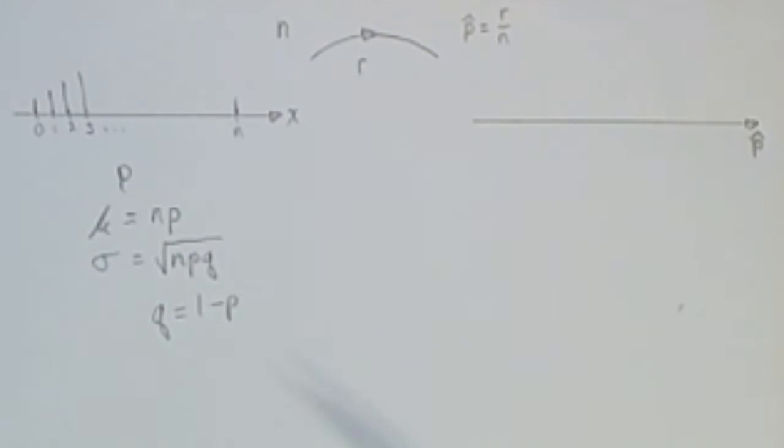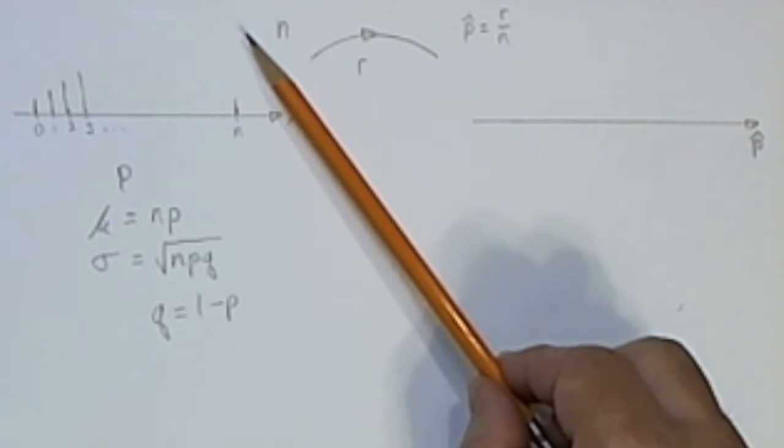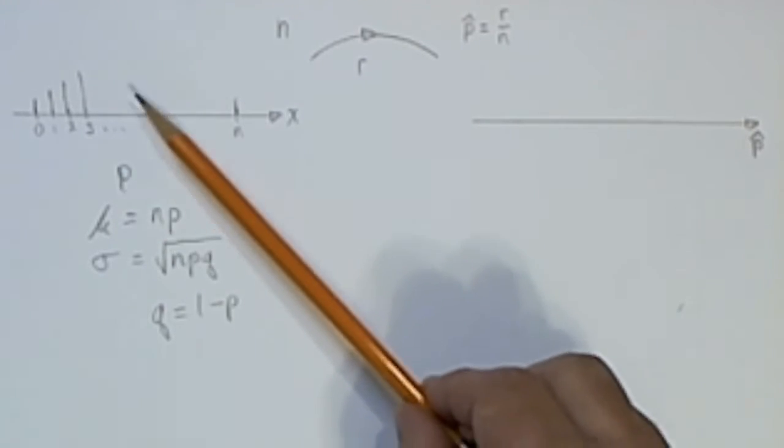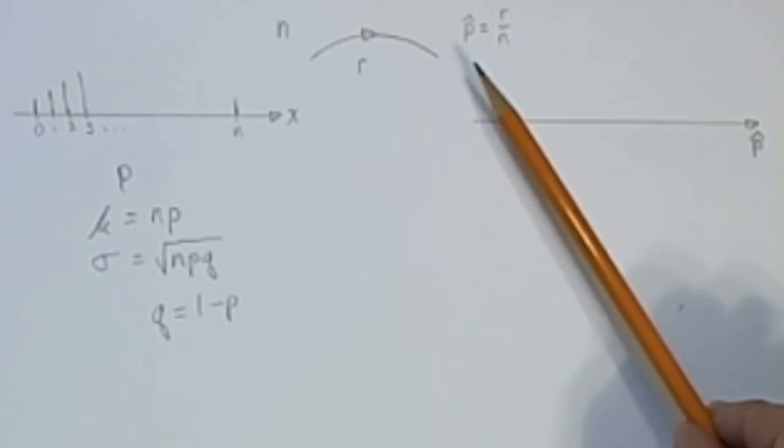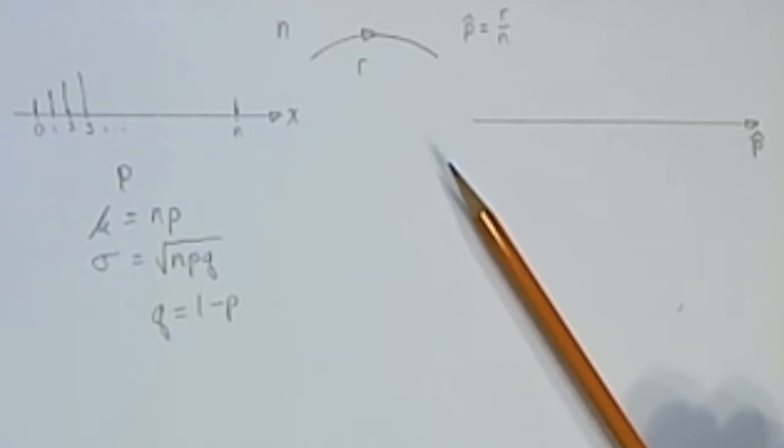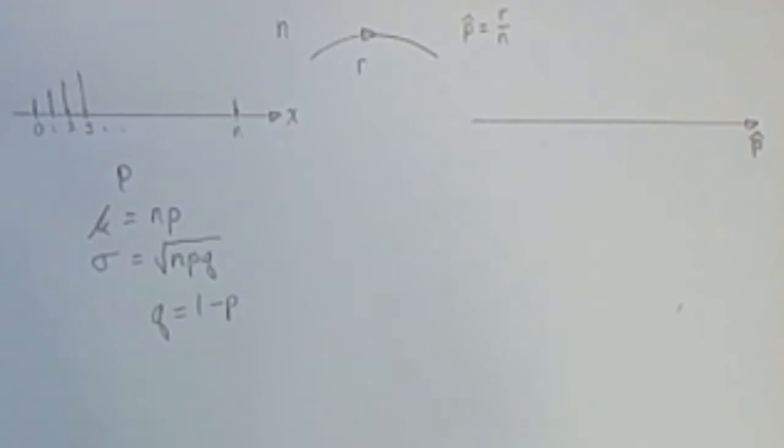If we considered every possible sample of size n from this probability distribution, calculated the p-hat associated with each one, we would get a distribution of p-hats. This distribution will also have a mean and a standard deviation.